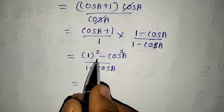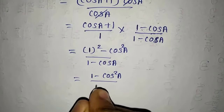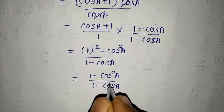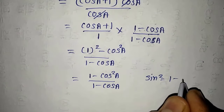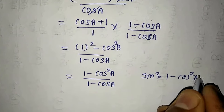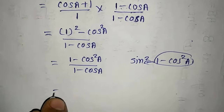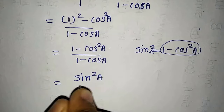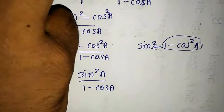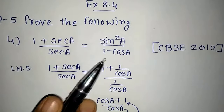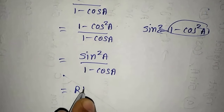So we know that 1 square minus cos square A. I can write 1 minus cos square A upon 1 minus cos A. We know the identity that sin square A is equal to 1 minus cos square A. So 1 minus cos square A, I can replace with sin square A. That gives us sin square A upon 1 minus cos A, which is what we had to prove — the right hand side.